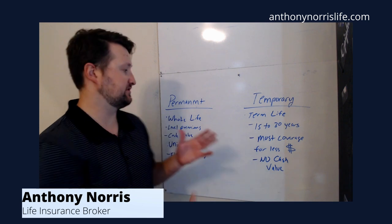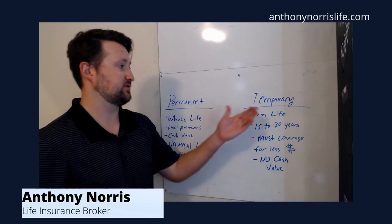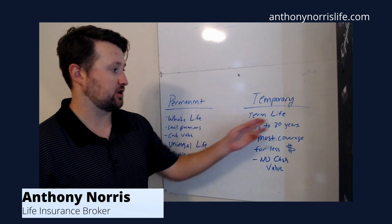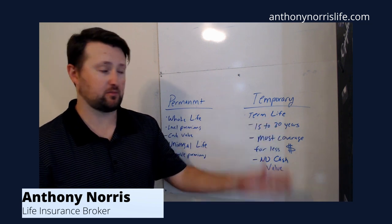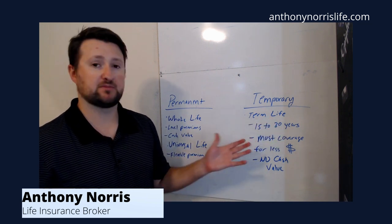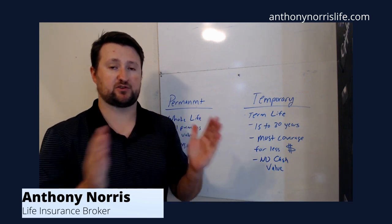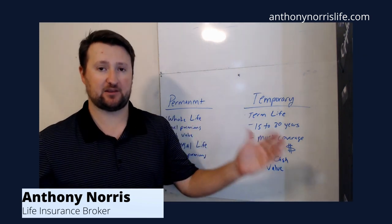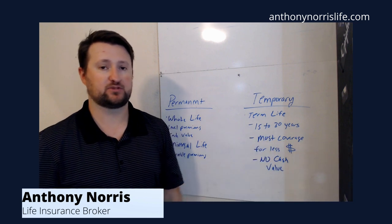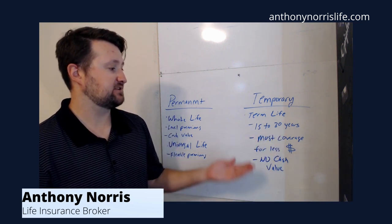Both of these are exactly what they sound like. Temporary insurance is temporary. Term life insurance is the most well-known product. Typically it comes in terms, so you get coverage for a certain duration of time at a death benefit that you select — typically 15 to 30 years.